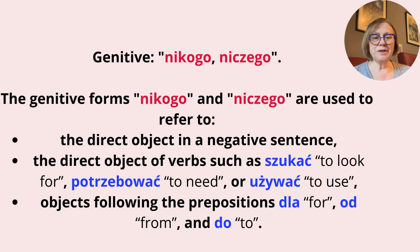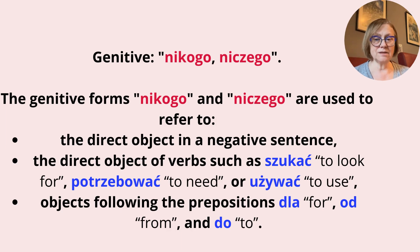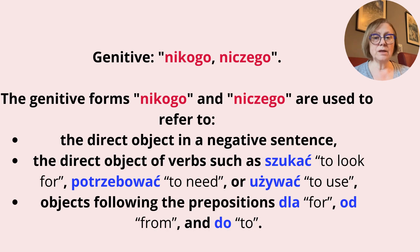Genitive: Nikogo, Niczego. The genitive forms Nikogo and Niczego are used to refer to: 1) the direct object in a negative sentence; 2) the direct object of verbs such as szukać (to look for), potrzebować (to need), or używać (to use); 3) objects following the prepositions dla (for), od (from), and do (to).